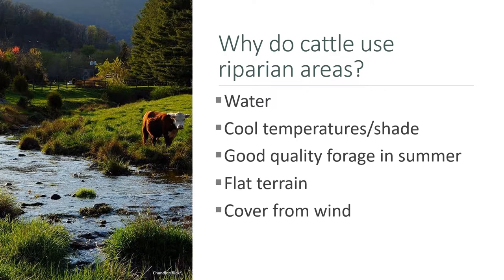Cattle and livestock in general are attracted to riparian areas for several reasons. There's water there. They're usually cooler with shade, which is great in the summer. Good quality forage is available, especially in summer when uplands get dry. The topography is flatter in riparian areas — which is also why roads, hiking trails, and railroad beds are found there. And there may be cover from the wind once you get into the trees.